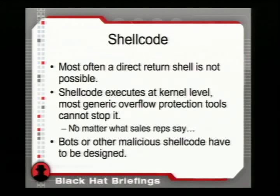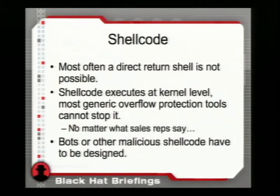That leads us to shellcode. When you write shellcode for ring-zero bugs like this, you're attacking something not necessarily on a network with you, so getting a connect-back shell is hard — you don't have an IP address. Most useful shellcode for ring-zero bugs will drop a bot or similar payload and let it run, then phone home at the next convenient time. Shellcode executes at kernel level, and most generic overflow protection tools don't cover kernel space well because they take a huge performance hit.